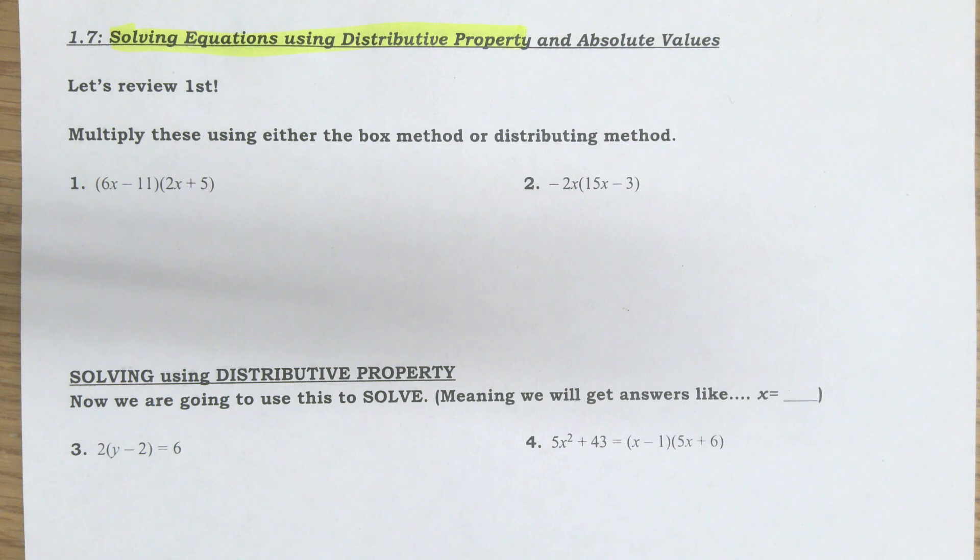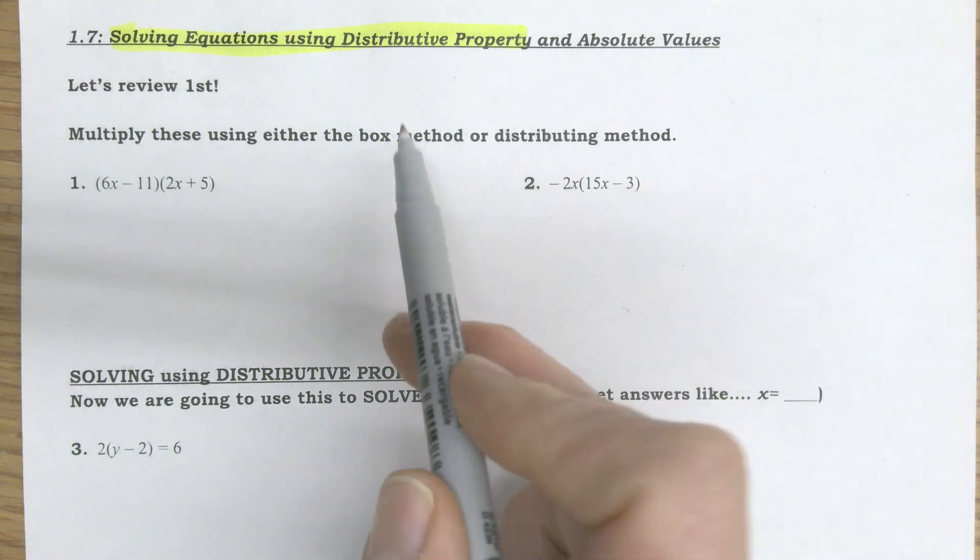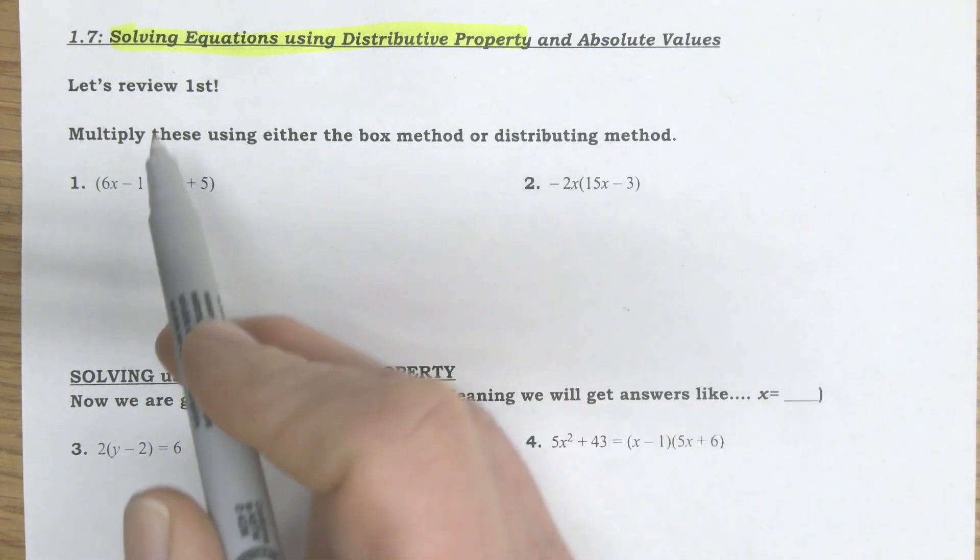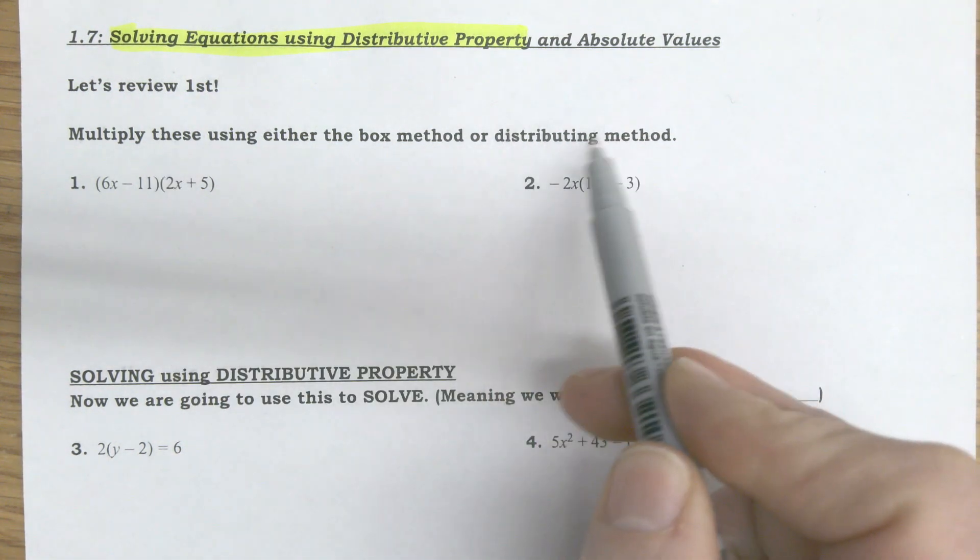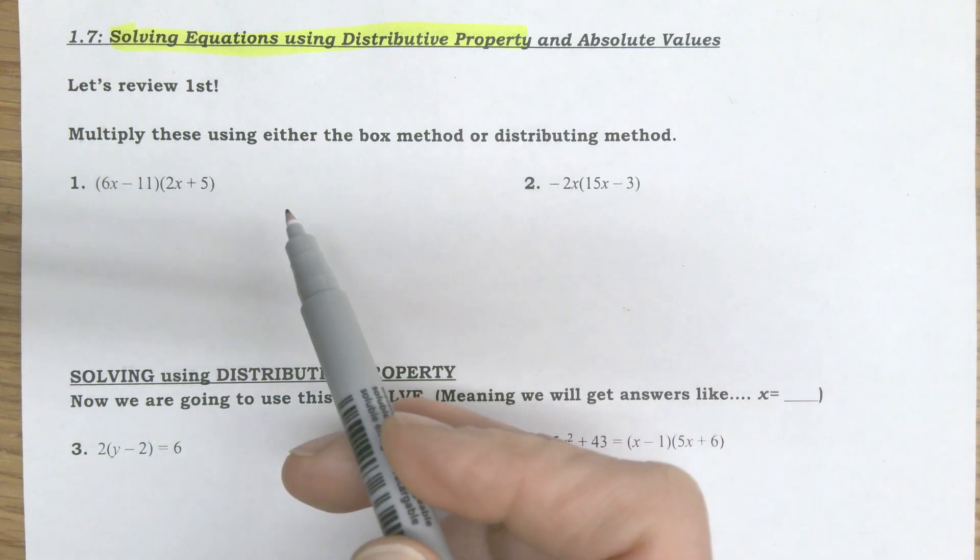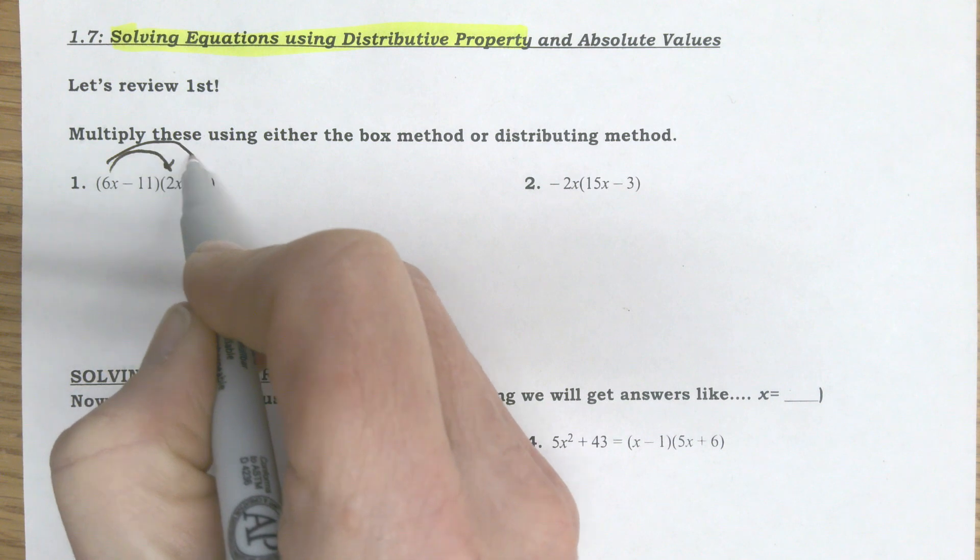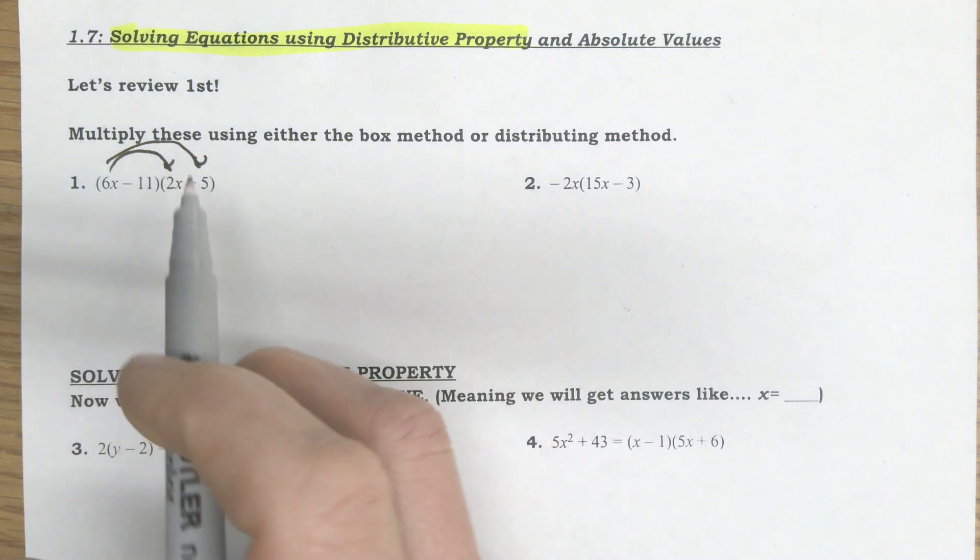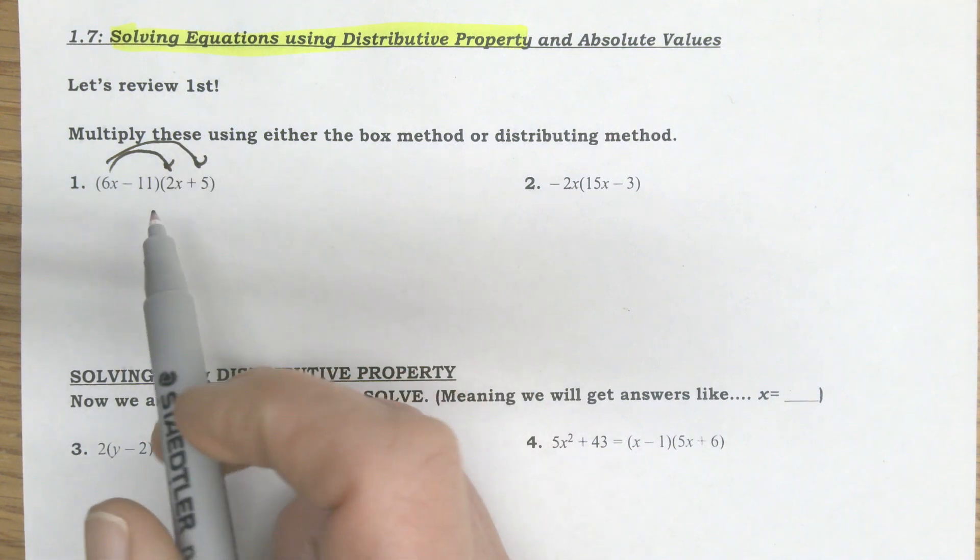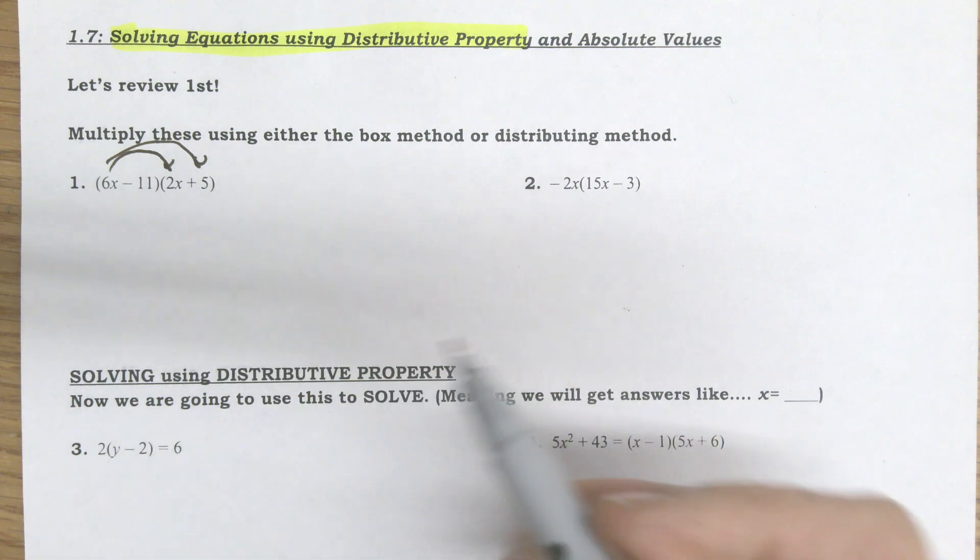So solving using the distributive property. Let's start by reviewing the distributing or box method. Because most people seem to prefer the distributing method, I'm going to do it that way. Keep in mind that it's everything in the first times everything in the second. If you prefer the box method, then go ahead and do your work using the box method.